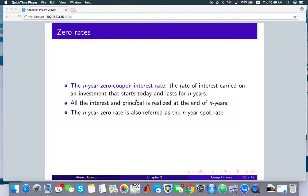So we call this as the n-year zero coupon interest rate. All the interest and principal is realized at the end of n years. And you might also sometimes notice that the n-year zero rate is also referred as the n-year spot rate.